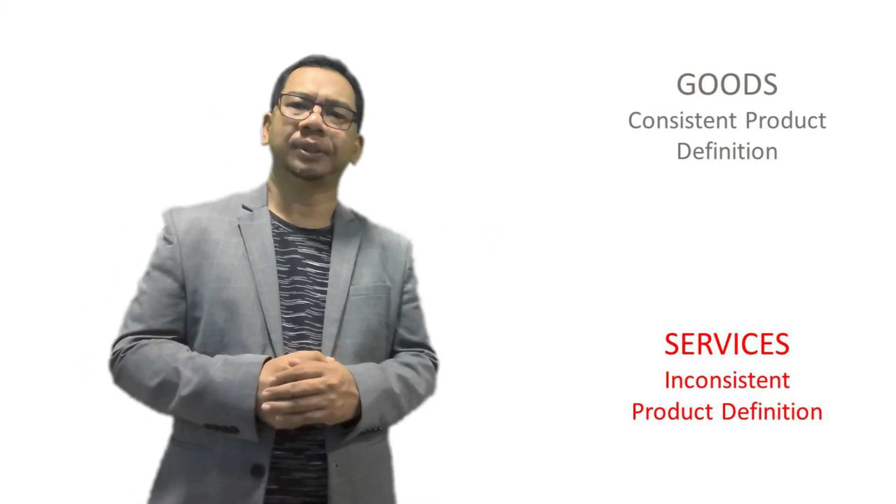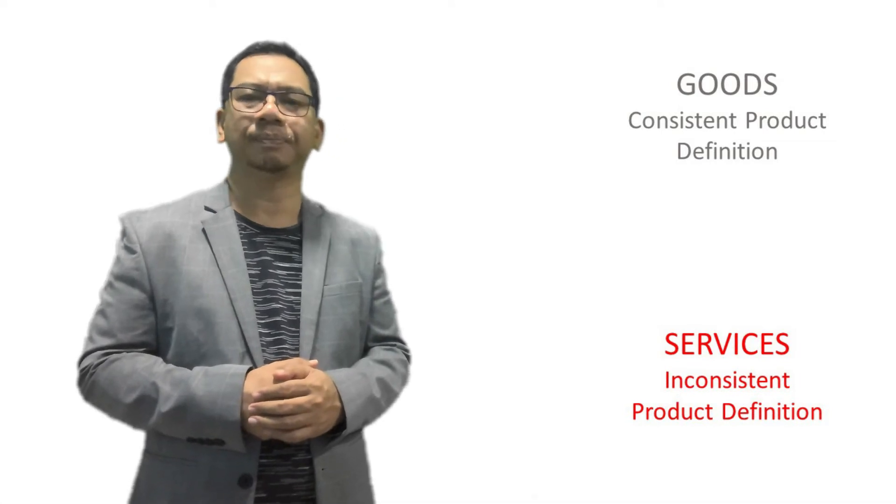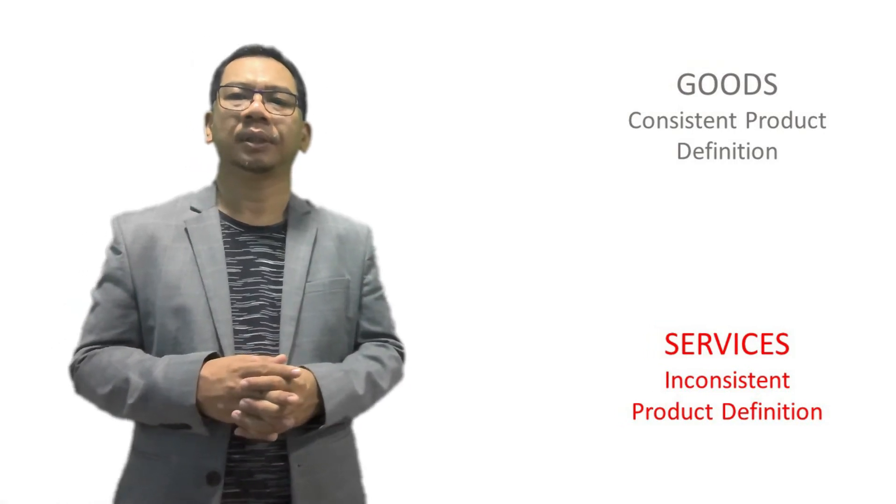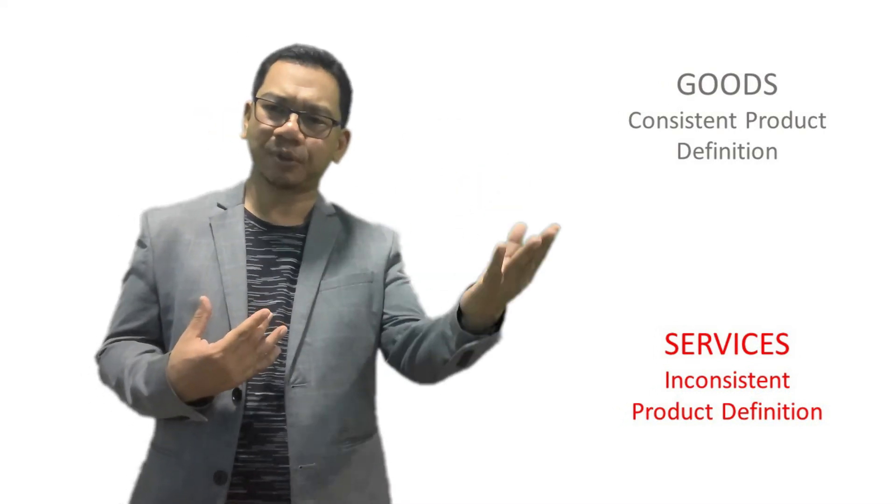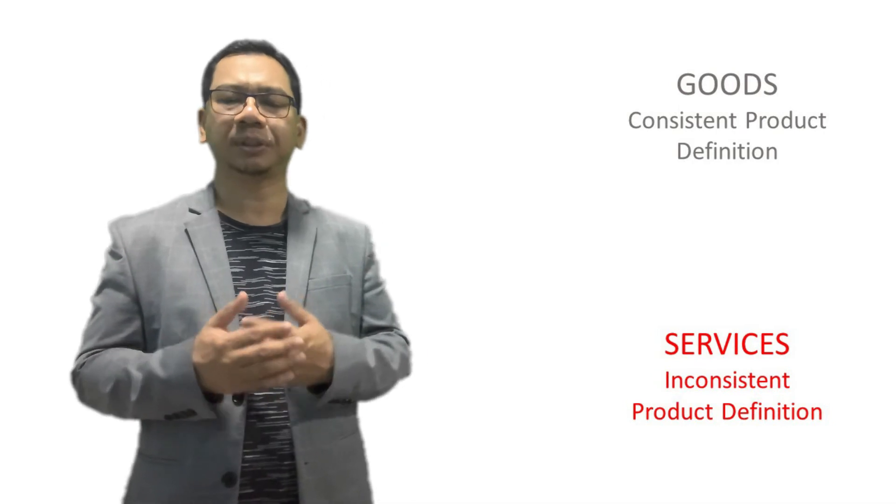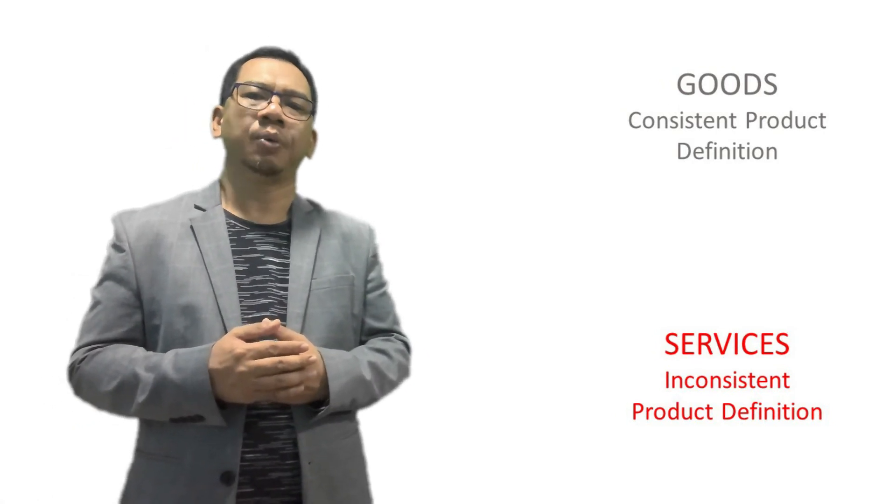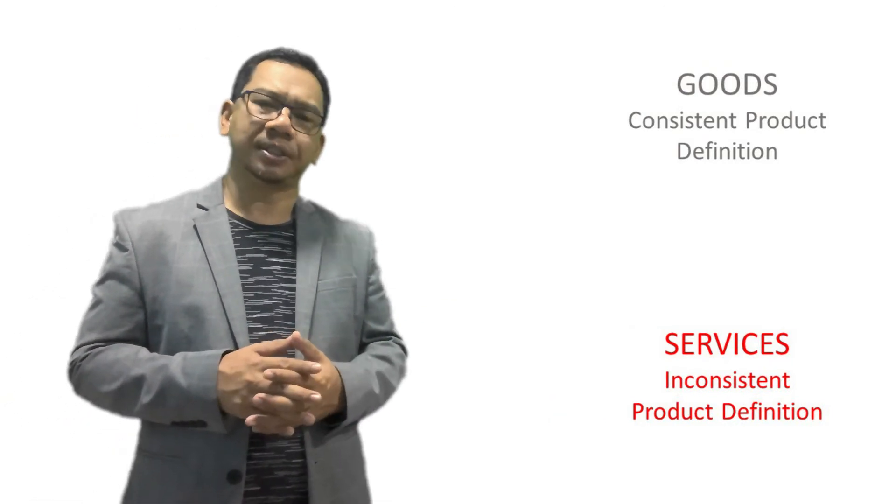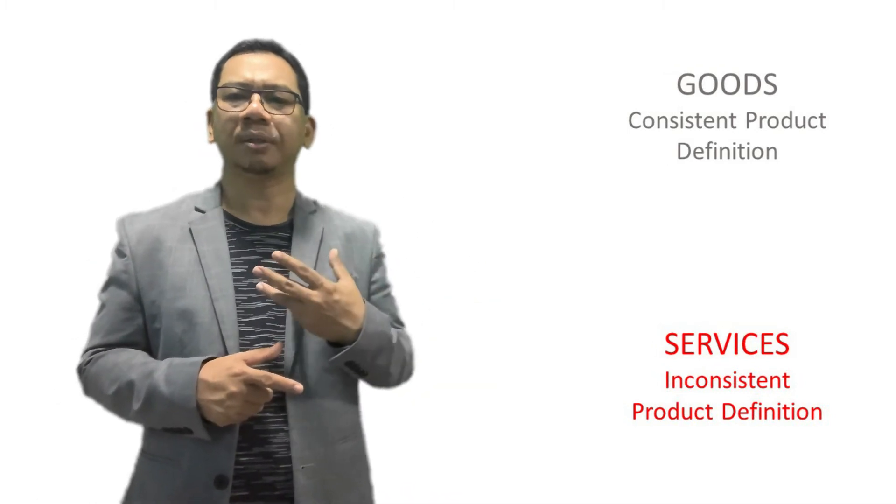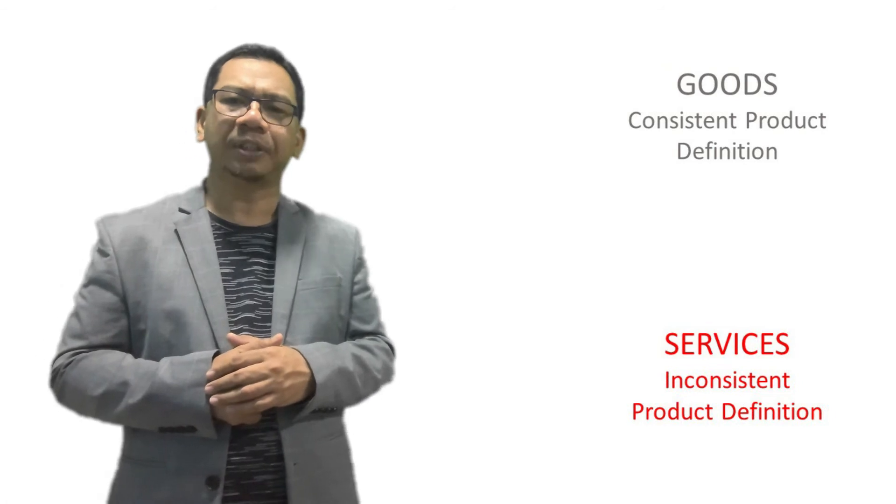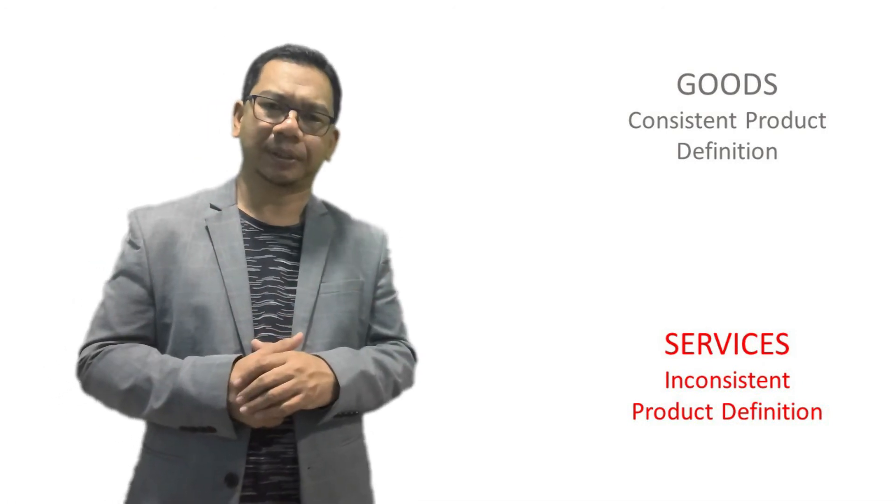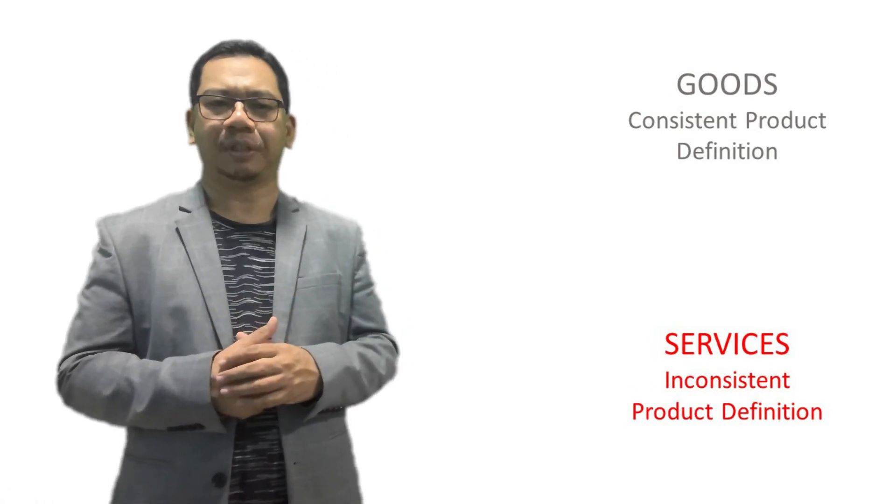Second characteristic is that the consistency of product definition. Goods are normally produced in a standardized form. For example, Samsung handphone that I have is basically the same as your Samsung handphone. It is identical and that is why for goods we say that it has consistent product definition. Whereas in service, the product definition is very inconsistent. The beauty treatment, for example, that you get may not be the same as my treatment. The nature of the treatment depends on many factors such as age, skin profile, unique individual preferences. So the way we define is totally different depending on the individual.